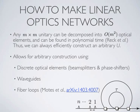Now let's talk about how to build these things. The first thing we need is a linear optics network. There's a famous result by Reck and Zeilinger showing that an arbitrary M×M unitary can be decomposed into O(M²) optical elements, and the decomposition can be found in polynomial time. Using discrete optical elements like beam splitters and phase shifters, or waveguides, we can always build such a device. In some recent work by my own group, we showed that a fiber loop architecture can also implement an arbitrary unitary network, with photons coming in as a pulse train separated by some time per pulse.